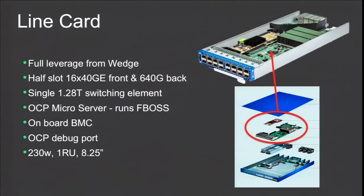Let's look at the line card. First of all, it's a full leverage from Wedge. If you look at the Wedge picture we announced about six months ago and take the element in the circle, move it up — this is exactly what's in the line card. We didn't even spin it; it's the same board, the same mechanism. It's a half-slot, 16 by 40-gig to the front and 640-gig to the back. The 640 in the back right now is running as 16 by 40 as well, but you can run other configurations. The topology on the back is completely in your control. It's a single 1.28-terabit switching element. It's an OCP microserver running FBOSS. We have an onboard BMC to make it look like a server. It has an OCP debug port. This is 130 watts, 1RU.